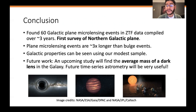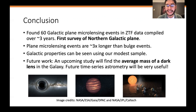In conclusion, we found 60 galactic plane microlensing events over ZTF data compiled over three years — this is the first ever survey of the northern galactic plane, having previously only been done in the southern plane using OGLE. Galactic plane events are indeed longer than bulge events, specifically about three times as long. Galactic properties can be seen in our modest sample because microlensing is an independent probe of galactic structure. A future study will find the average mass of a dark lens in the galaxy, and future time series astrometry will provide another independent constraint on the lens mass, allowing us to classify events as stellar mass black holes, brown dwarfs, low luminosity stars, planets, and so on. Thank you.